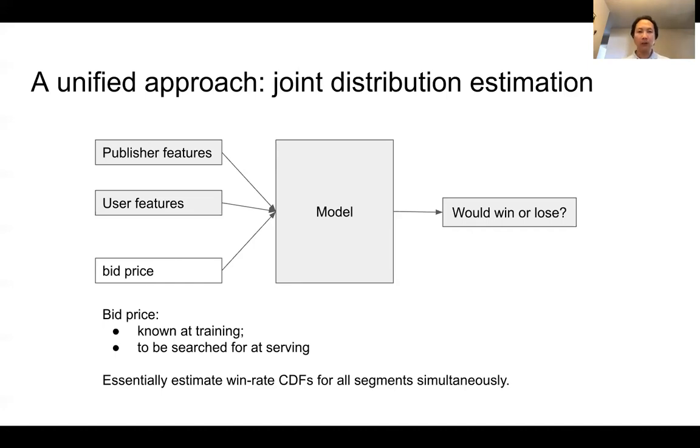However, people are often confused how we are going to use this model at serving time because bid price is exactly the value we are looking for. So at serving time, if we give a different bid price to the model, run the inference once we can get the winning probability, then we can know the expected surplus.